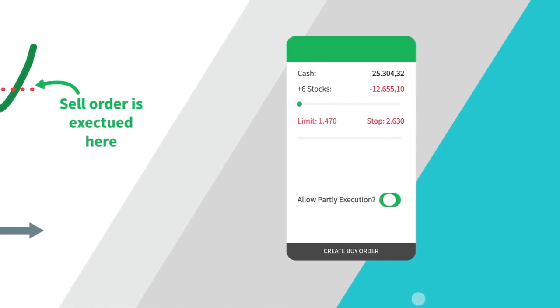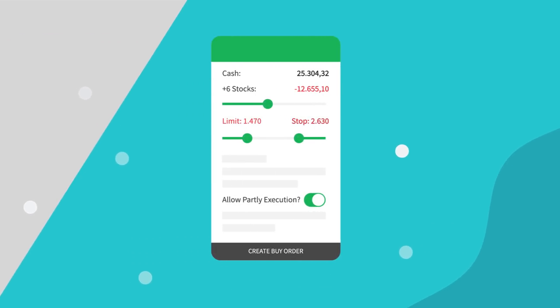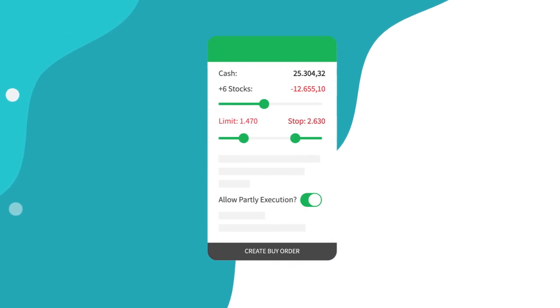Don't worry. You don't need to memorize all the types of orders. Our app tells you when your order will be executed in a dynamic text on the order screen.